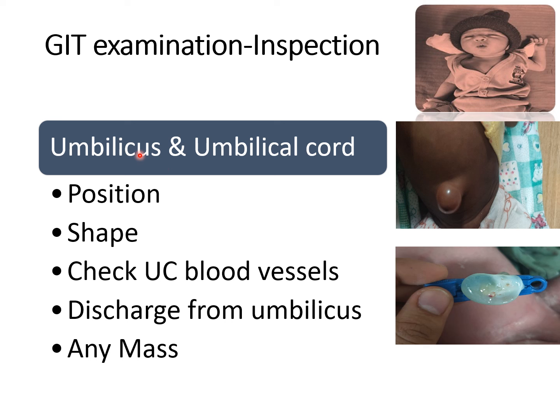Then we should check the umbilicus and umbilical cord. The position and shape of umbilicus — as you can see in this image, the baby has a centrally placed umbilicus but the shape is protruded, not the normal shape. We have to check the umbilical cord blood vessels, any discharge or secretion from the umbilicus, or any mass, and then we have to mention these findings.